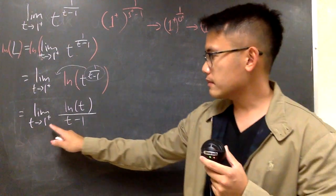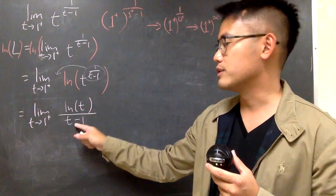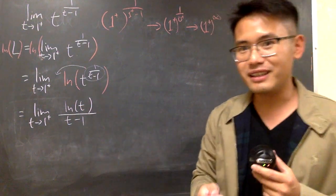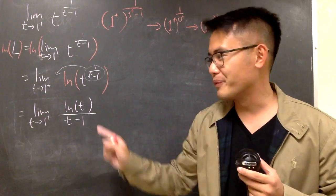And now, if you plug in 1 plus into here, you get 0, and likewise you also get 0, and that's another indeterminate form. But the best part is that we can use L'Hôpital's rule to handle this.